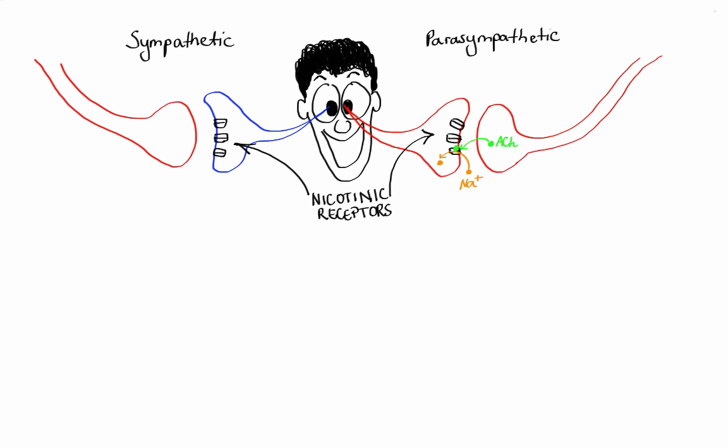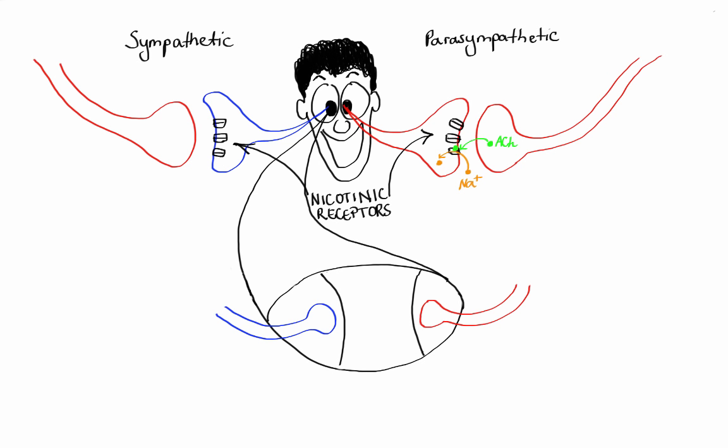On the other hand, all the receptors on the effector organs that are receiving signal from sympathetic neurons are called adrenergic receptors, and the ones that are receiving signal from parasympathetic neurons are called muscarinic receptors. For example, if we zoom in at this area right here where the very ends of these postganglionic neurons meet the smooth muscle cell of the eye, the sympathetic adrenergic neuron would stimulate adrenergic receptors leading to pupil dilation, and the parasympathetic cholinergic neuron would stimulate muscarinic receptors leading to pupil constriction.